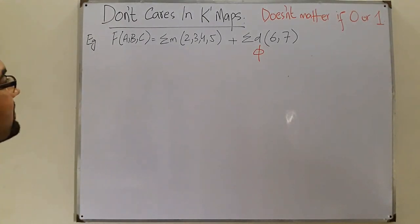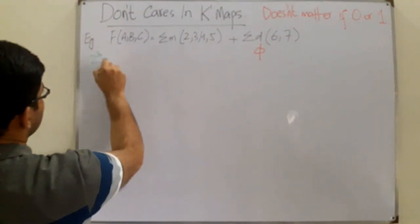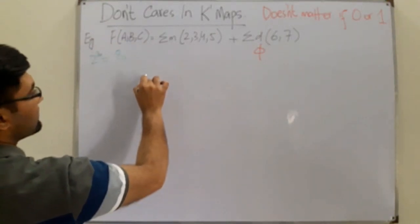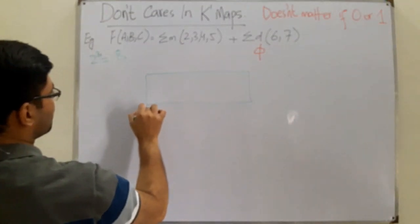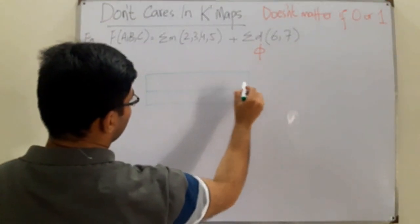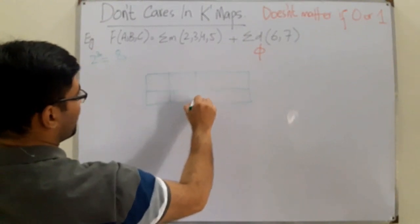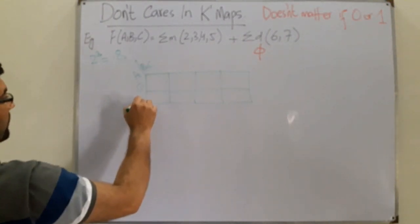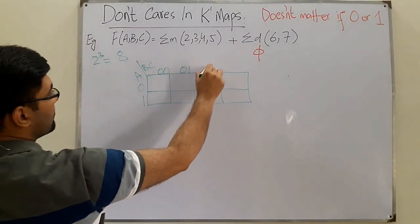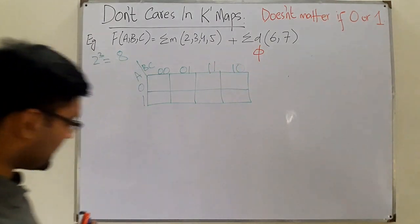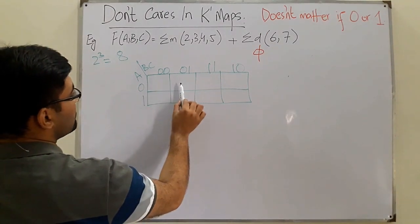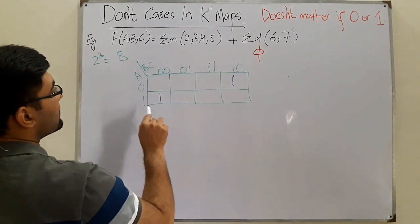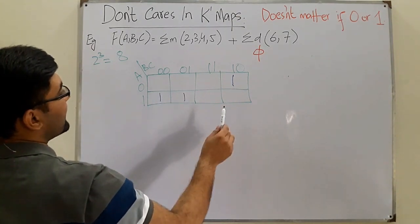This is a three-variable map, which means we have 2 to the power 3 = 8 cells. We draw those eight cells. We have 'a' on one axis and 'bc' on the other, with values 00, 01, 11, and 10. The rows are 0 and 1. So minterm 0 is this one, 1 is this one, 2 is this one, 3 is this one, 4 is this one, and 5 is this one.